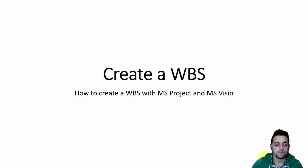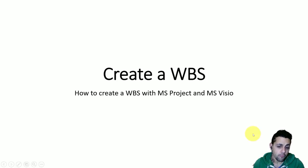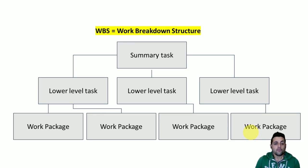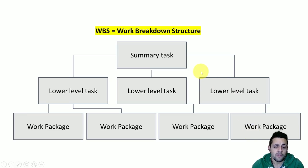Today I'm going to teach you how to create a work breakdown structure using Microsoft Project and Microsoft Visio. But before we go into the main activities, let's recap what is a work breakdown structure. A work breakdown structure is a composition of the different activities that form our project, and it's typically represented like a tree diagram. In the upper levels we have the summary task, which is the entire project, and as we go into the lower levels, we have the different activities that form our project.